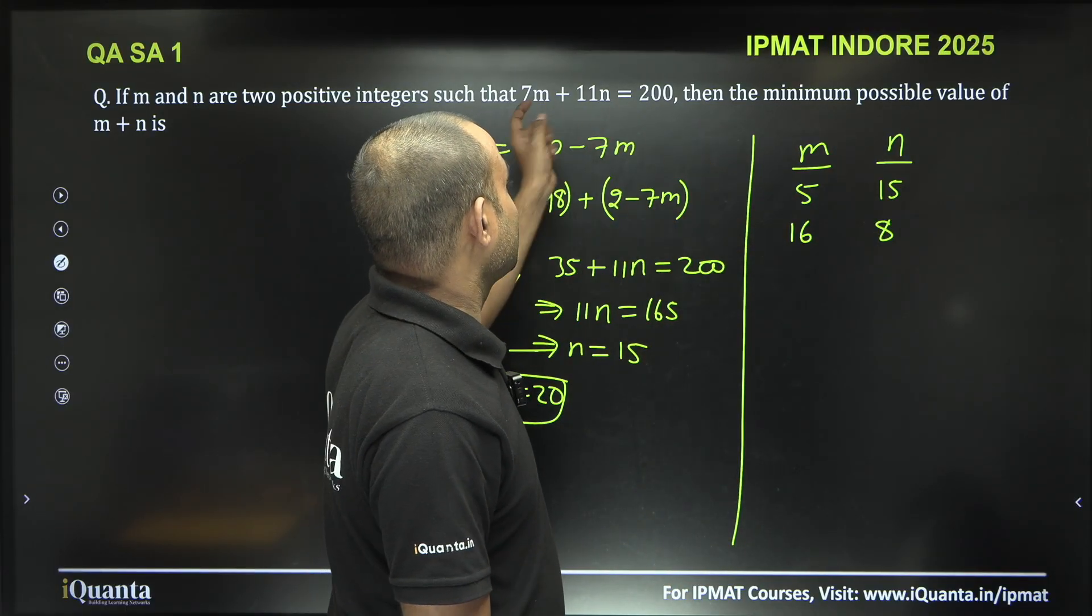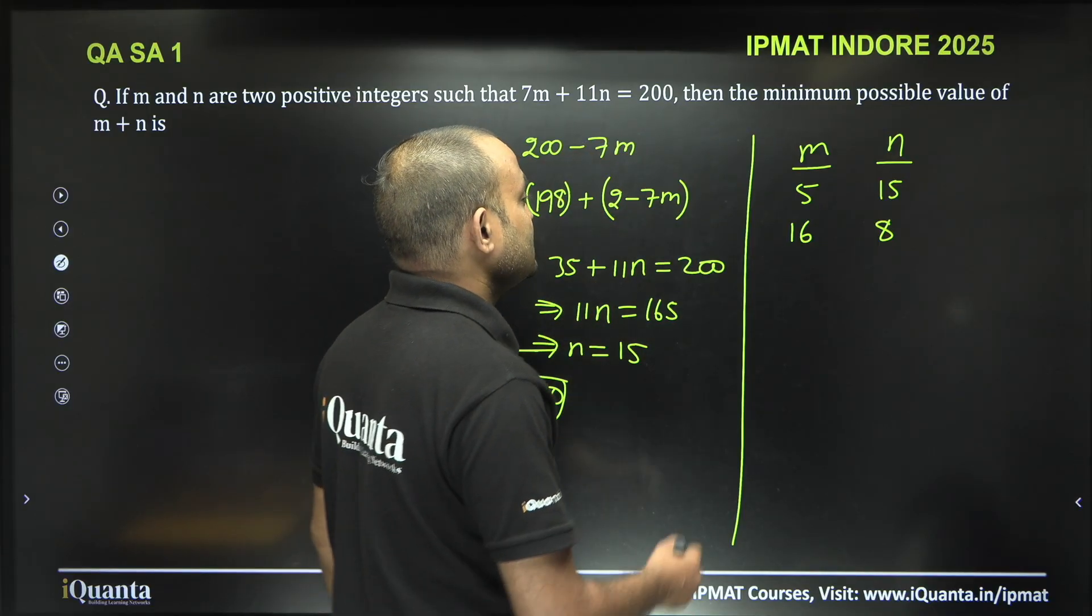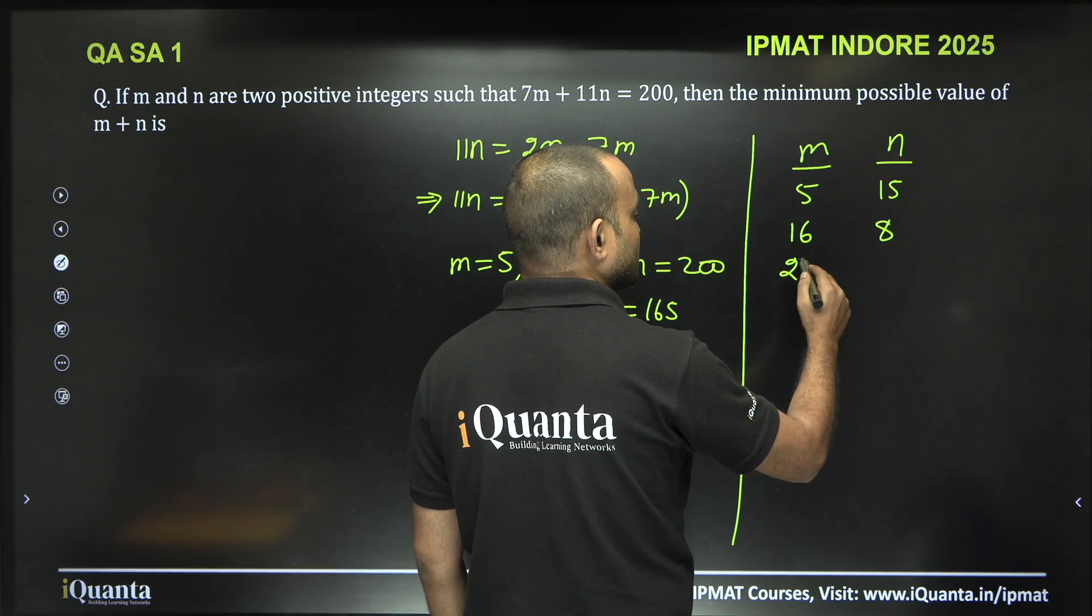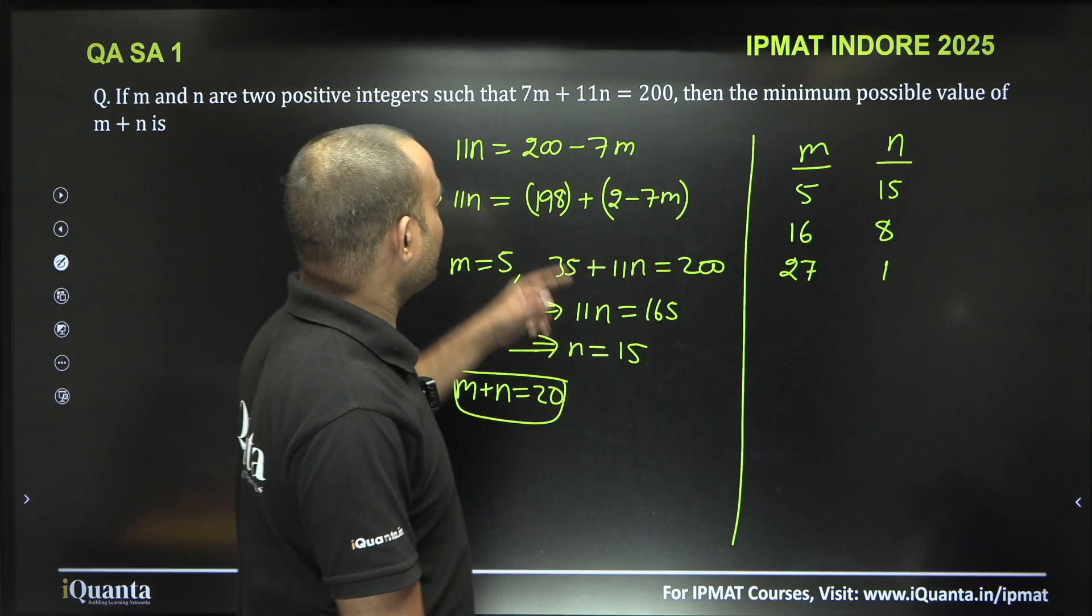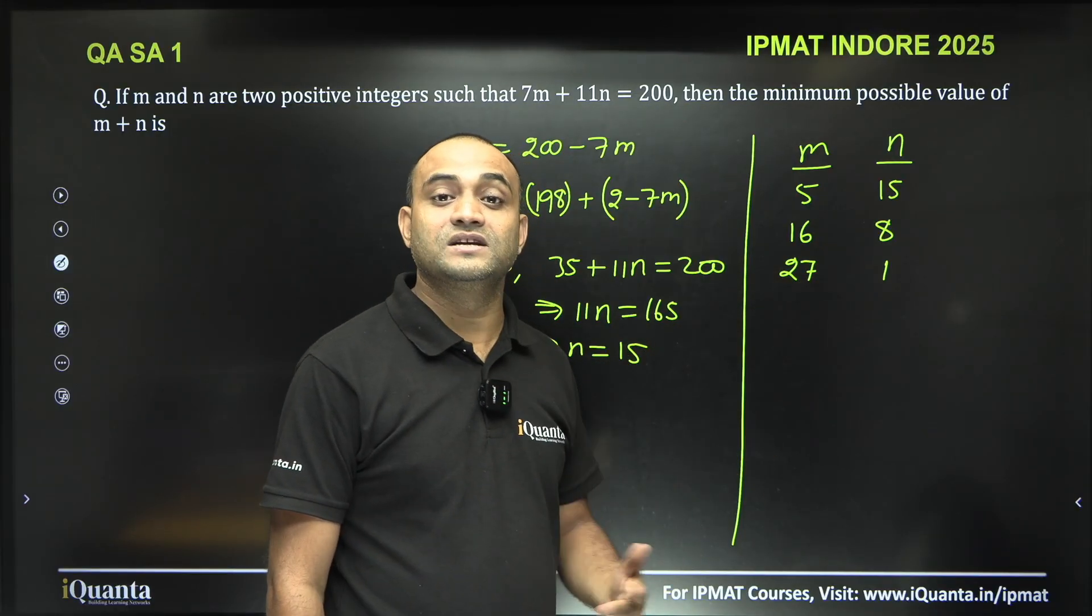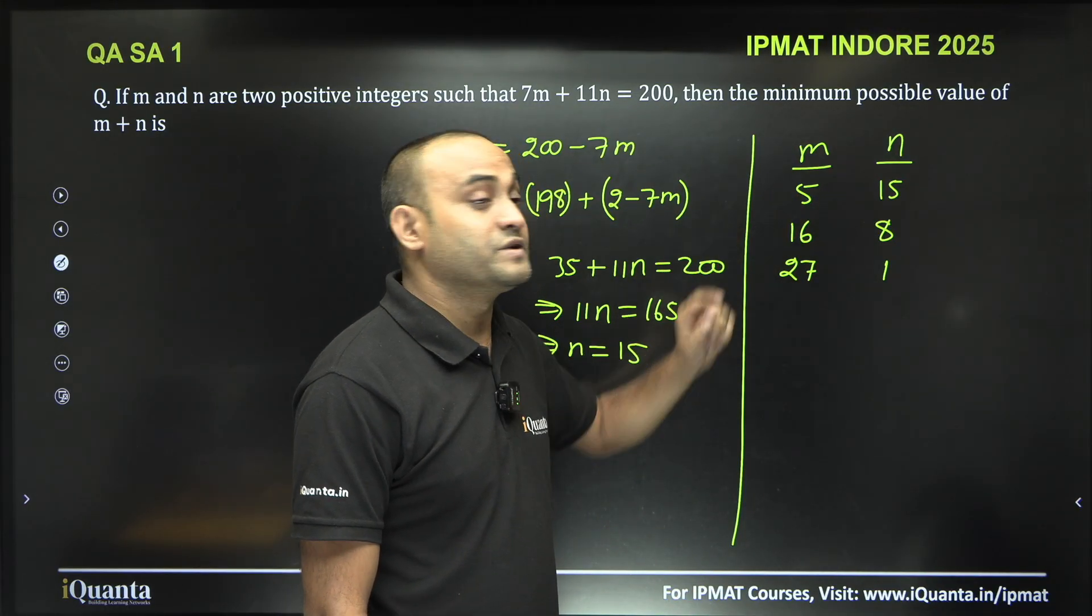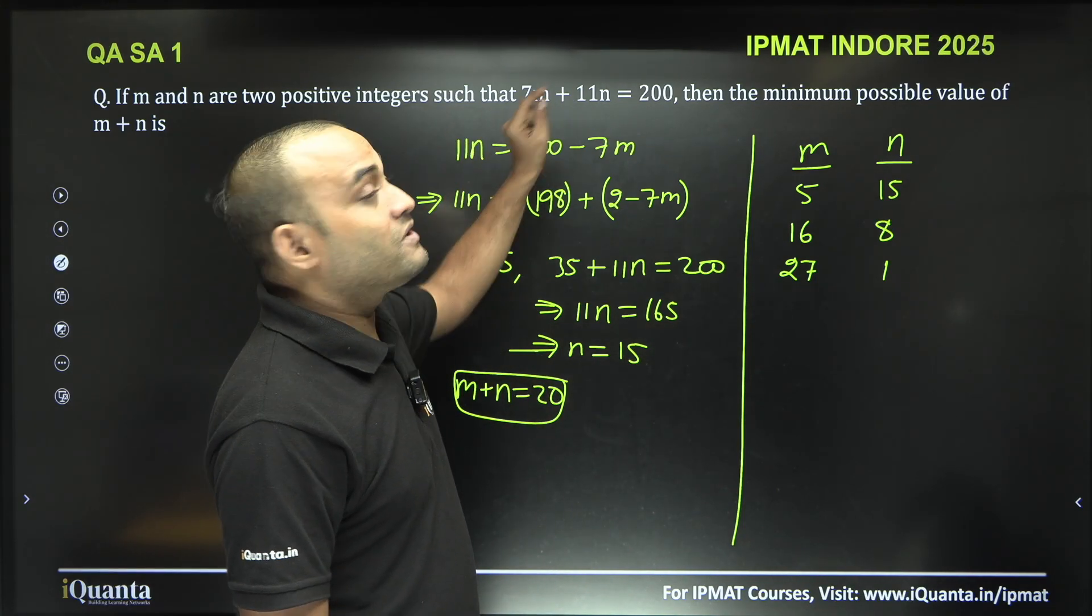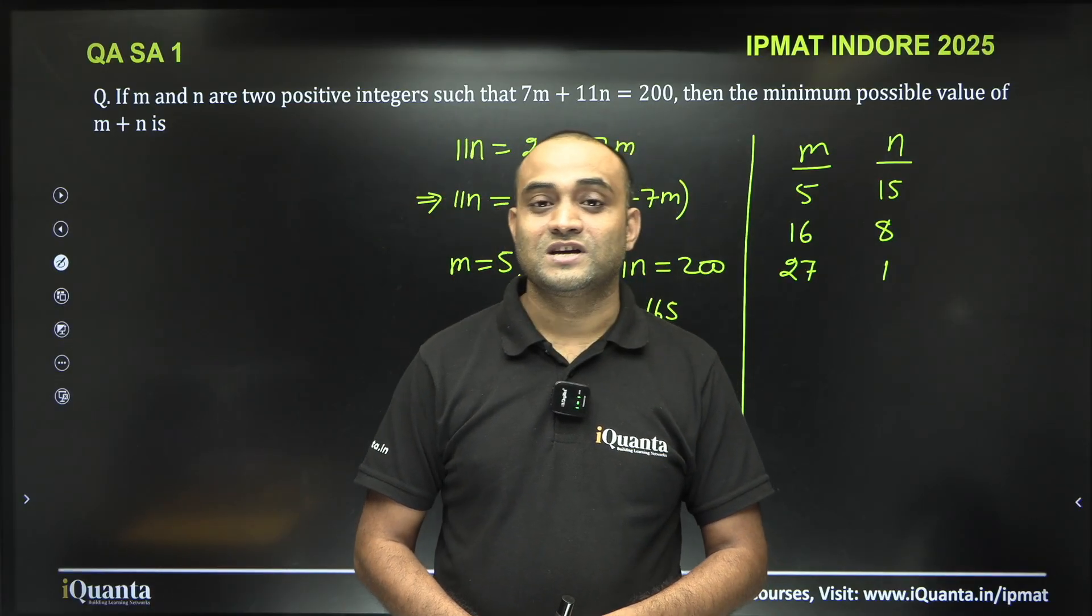Still you will get the same answer: 7 into 16 plus 11 into 8 is nothing but 200. Then the next value of m that we can take, increase it by 11, this will become 27, decrease it by 7, this will become 1. 27 into 7 is 189 plus 11 is 200, but the sum of m plus n is 28 which is bigger than 20. So that is why I am taking the maximum value of n to minimize the sum of m plus n here.